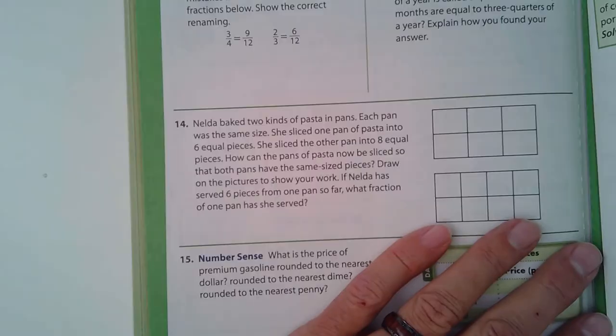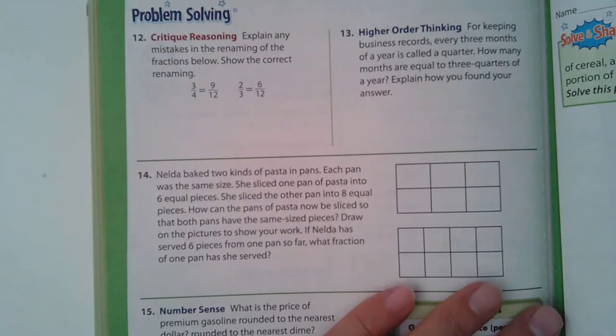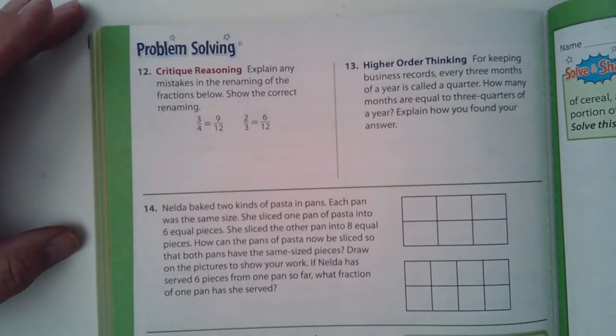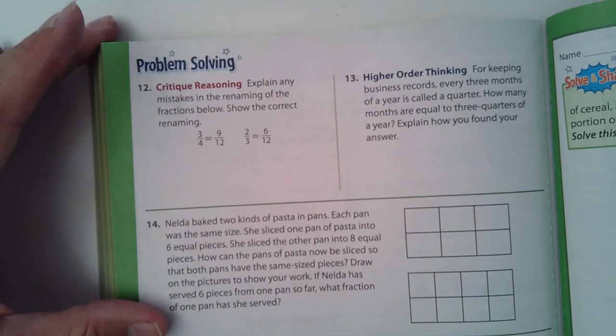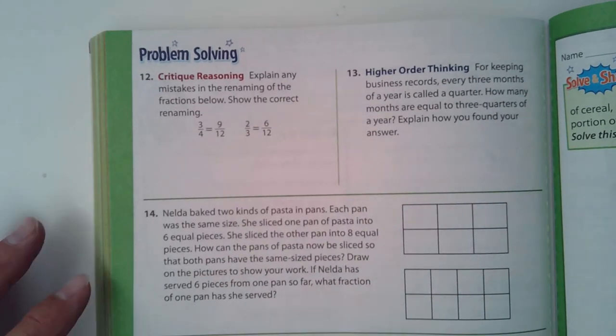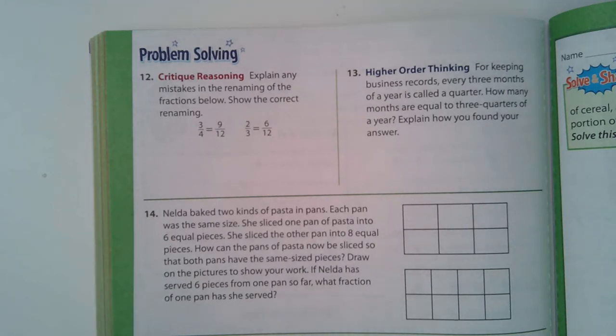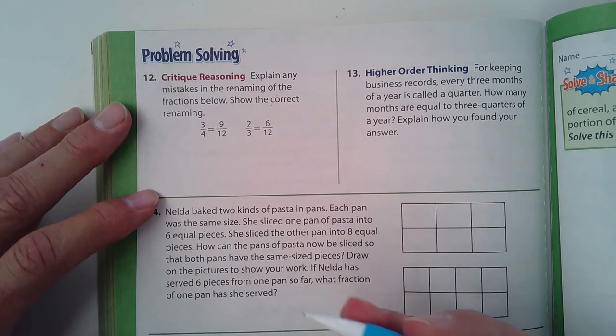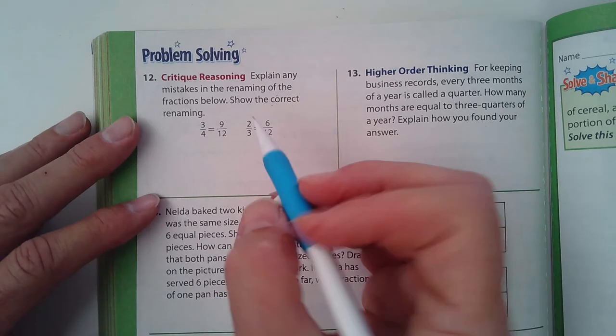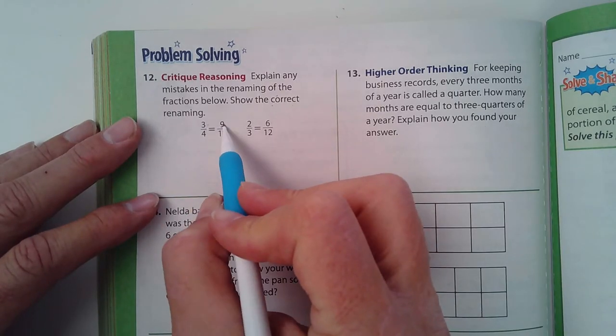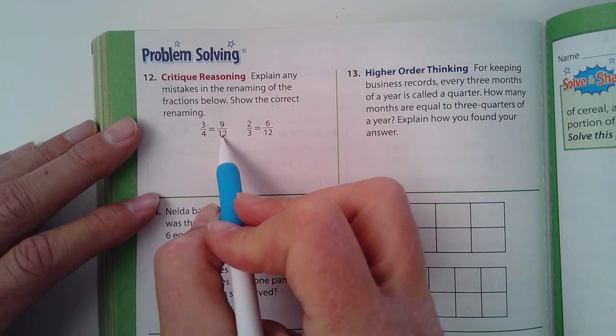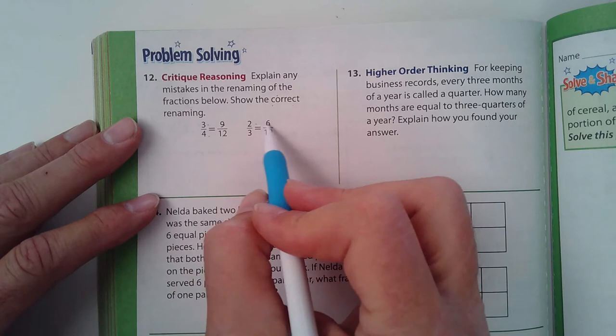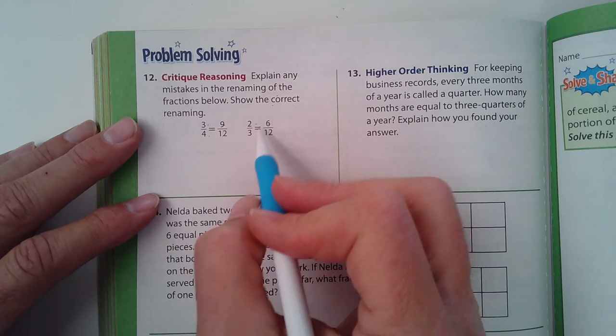Because I don't want to make these videos too long, I'm not sure they'll start causing problems here. So explain any mistakes in the renaming of the fractions below. Show the correct renaming. So that kind of tells me there probably is a mistake there somewhere. Three goes into nine three times, four goes into twelve three times. That works. Two goes into six three times, three goes into twelve, oh...